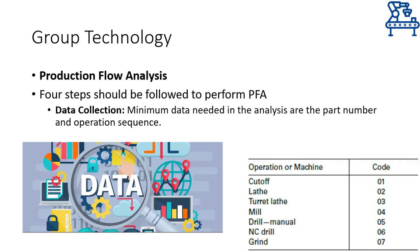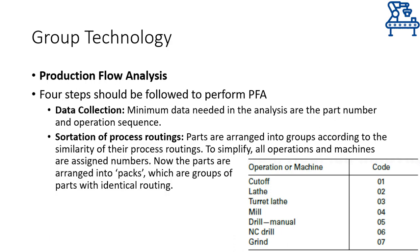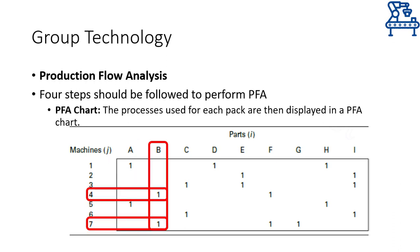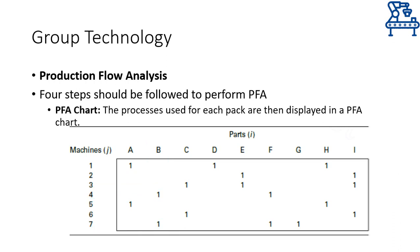Production flow analysis is done through four steps. The first step is data collection — the part number and the operation sequence through which the part will be manufactured. Machine tools or workstations are assigned a number and data is collected for every part. The second step is sorting through process routing, where all parts are grouped based on similarity in their operation sequence through the PFA chart, which is made at this point. The chart shows the operations performed on each part — for example, part A is manufactured through machine number 1 and 5, whereas part B is manufactured through machines 4 and 7.